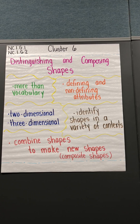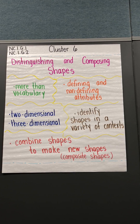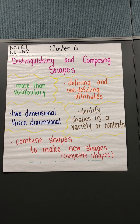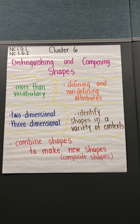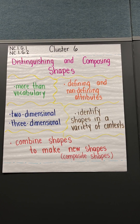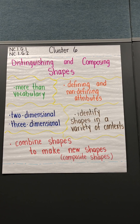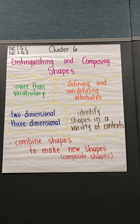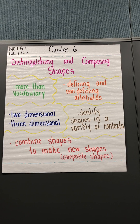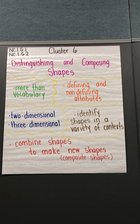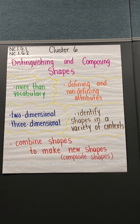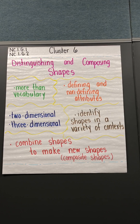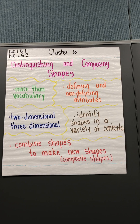Early geometry is much more than vocabulary and naming shapes. It involves developing the defining and non-defining attributes of the shape. A defining attribute of a shape is the number of sides, the number of angles, and that it is a closed figure. A non-defining attribute is color, size, and orientation.